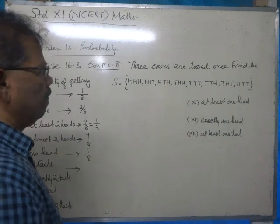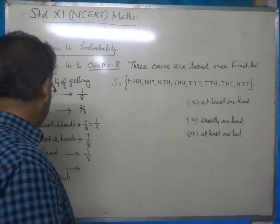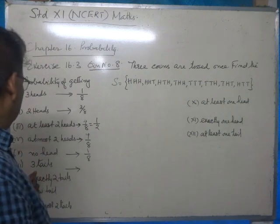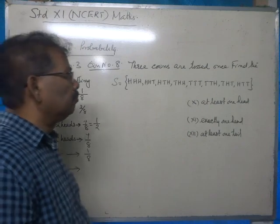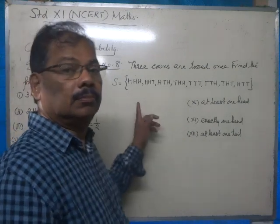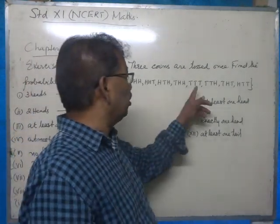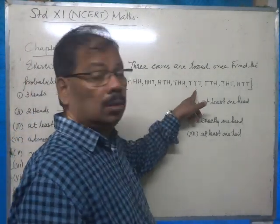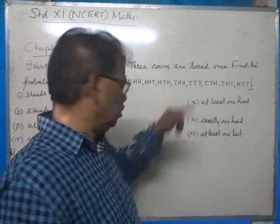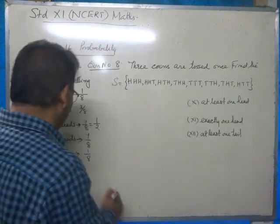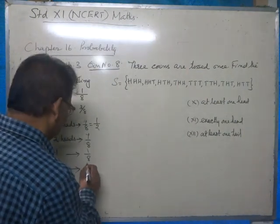Part six: the probability of getting three tails. That occurrence happens only once, so the answer is one by eight.